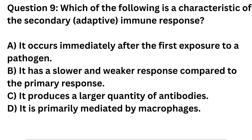Question 9. Which of the following is a characteristic of the secondary adaptive immune response? A. It occurs immediately after the first exposure to a pathogen. B. It has a slower and weaker response compared to the primary response. C. It produces a larger quantity of antibodies. D. It is primarily mediated by macrophages.